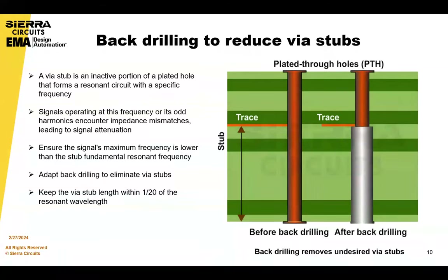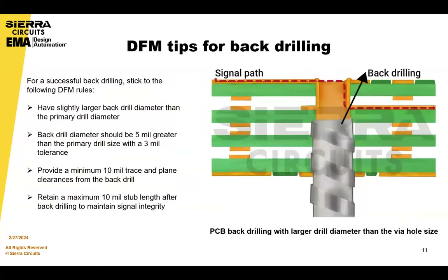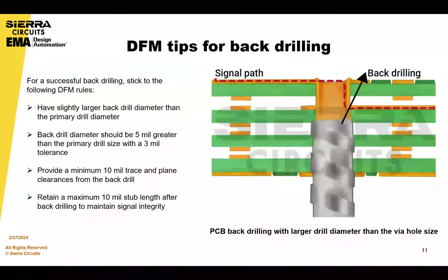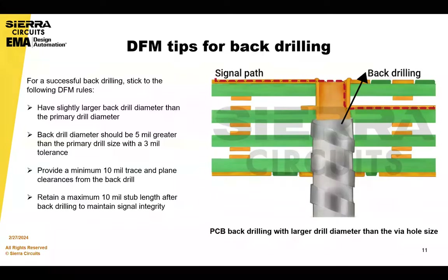You can keep the VIA stub length to a minimum — less than 1/20 of the resonant wavelength. From a practical standpoint, DFM tips for back drilling are important. Ensure that your back drill is slightly larger than the original drill — typically 5 mils over the drill size with a tolerance of 3 mils.